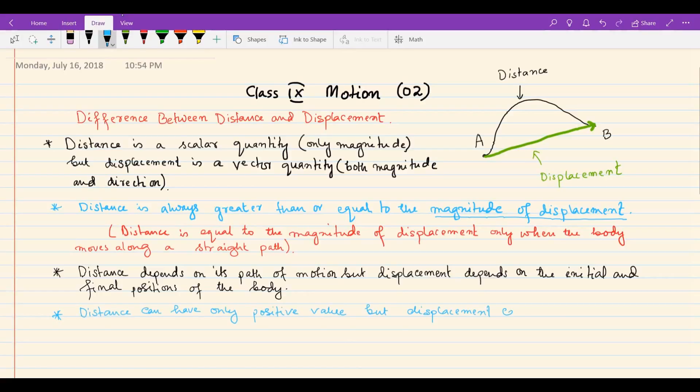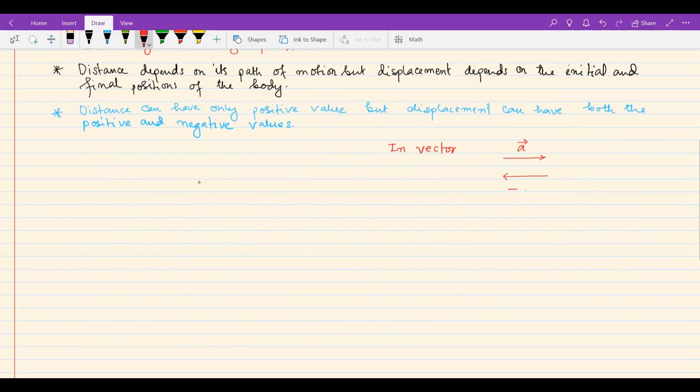Distance can have only positive values, but displacement can have both positive and negative values. Since displacement is a vector, and any vector has an opposite direction, displacement can be positive or negative.